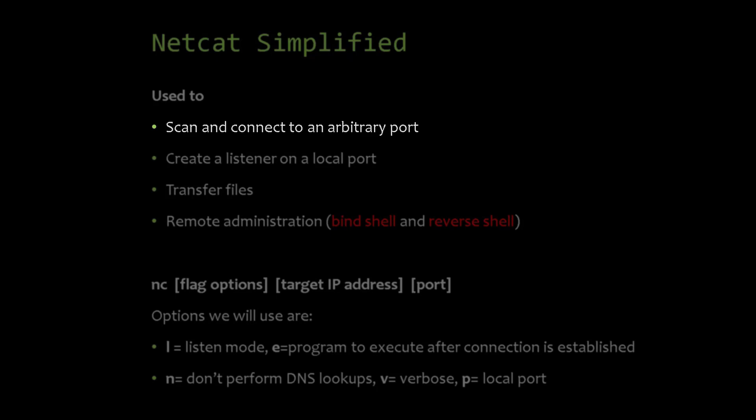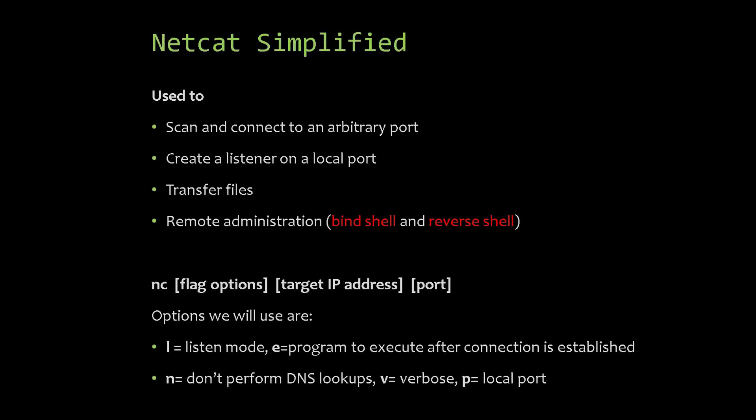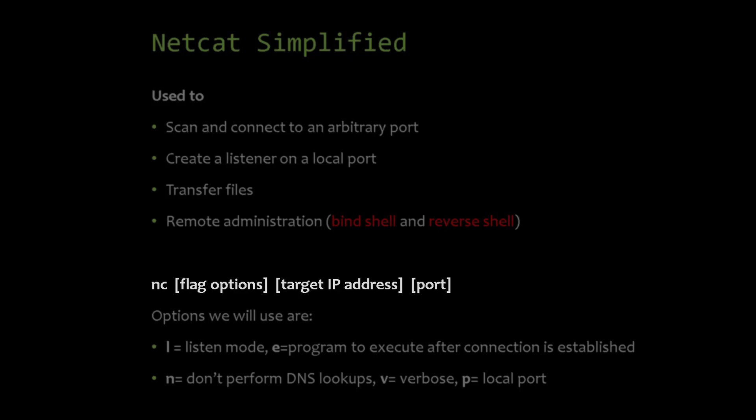We use Netcat to scan and connect to an arbitrary port, to create a listener on a local port, to transfer files, and for remote administration. We will see examples on how to bind a shell and how to bind a reversed shell. The syntax for using Netcat is: nc, then the flag options, then the target IP address, then the port.